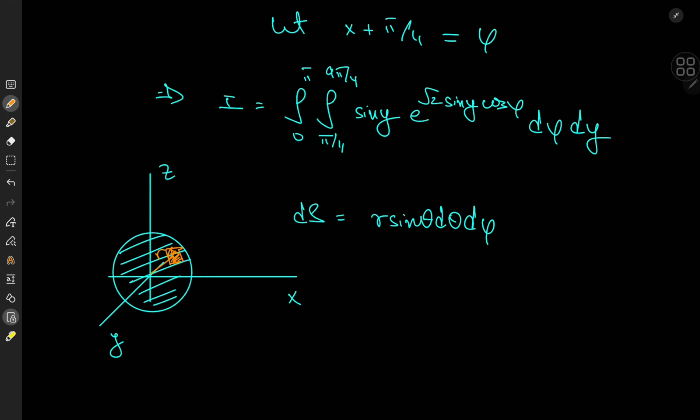and theta here is the angle made with the positive z axis which runs from zero to pi, and phi is of course the angle that the projection of this vector makes with the positive x-axis which varies from zero to 2pi.